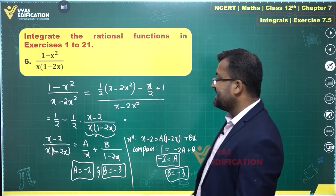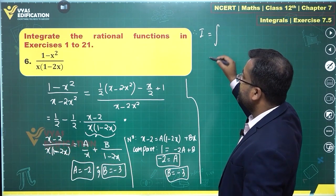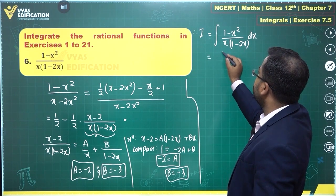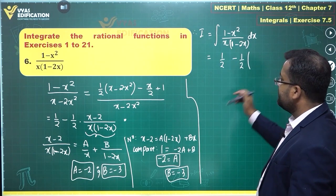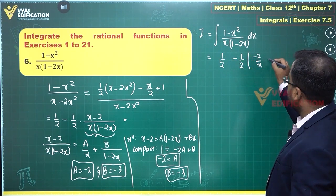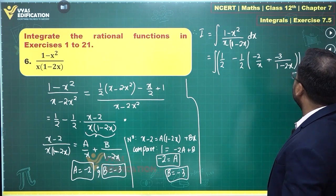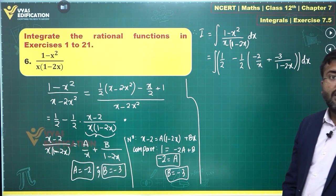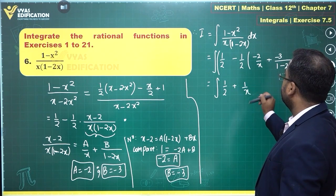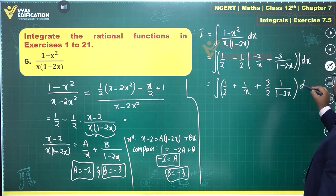Therefore, the original expression has been written as the sum of two partial fractions. The full integral I of (1 minus x square) over (x times 1 minus 2x) dx simplifies to: 1/2 separate, minus 1/2 times (minus 2 upon x plus minus 3 upon 1 minus 2x), all integrated with respect to x. Simplifying: this becomes 1/2 plus 1 upon x plus 3/2 upon (1 minus 2x), dx.